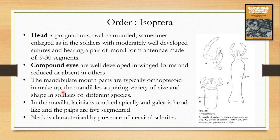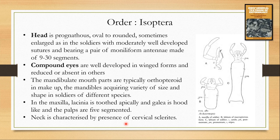The mandibulate mouthparts are typically orthopteroid in makeup. In the maxilla, the lacinia is fork-like and denticulate in structure. The galea is hood-like and the maxillary palp is five-segmented. They have a neck characterized by the presence of cervical sclerites. The mandibles can acquire a variety of size and shape in soldiers of different species — in workers they are moderate in size, but in soldiers they can acquire different shapes and sizes.